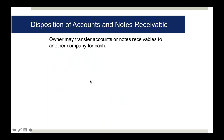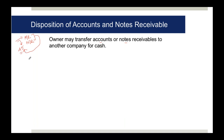Now, disposition of accounts receivable. If your company has a short-term cash requirement, accounts receivable or notes receivable can be converted into cash before they become due. For example, you sold goods on 45 days credit but cannot wait until the 45th day - you need cash now. You can dispose of these receivables to a third party.